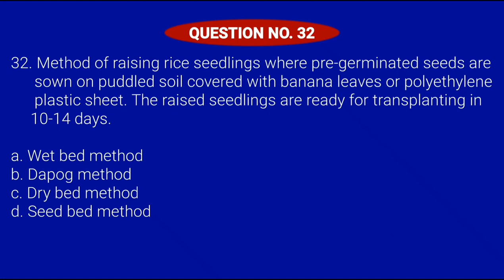Question number 32. Method of raising rice seedlings where pre-germinated seeds are sown on puddled soil covered with banana leaves or polyethylene plastic sheet. The raised seedlings are ready for transplanting in 10 to 14 days. Letter A, Wet bed method; Letter B, Dapig method; Letter C, Dry bed method; or Letter D, Seed bed method. Correct answer is Letter B, Dapig method.